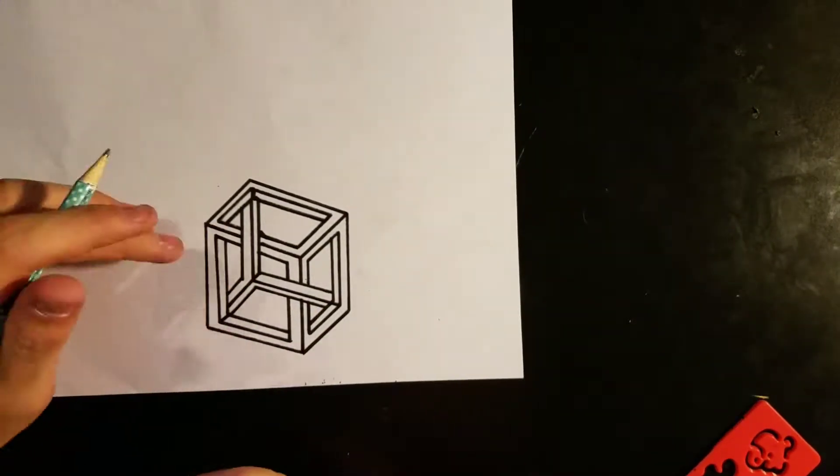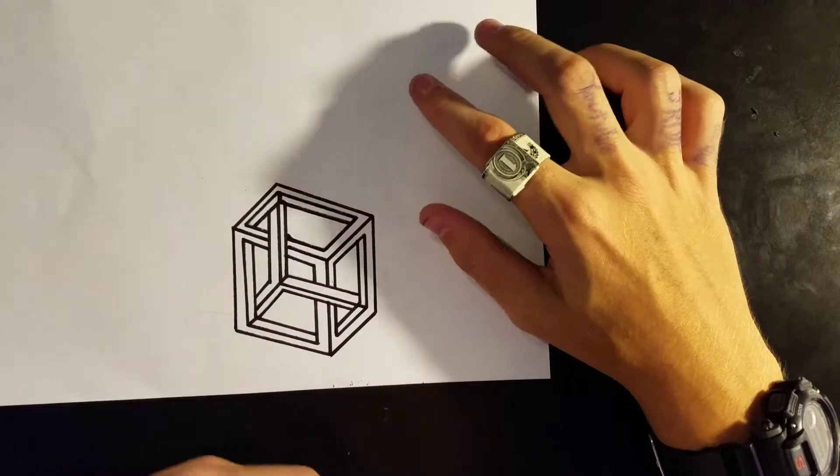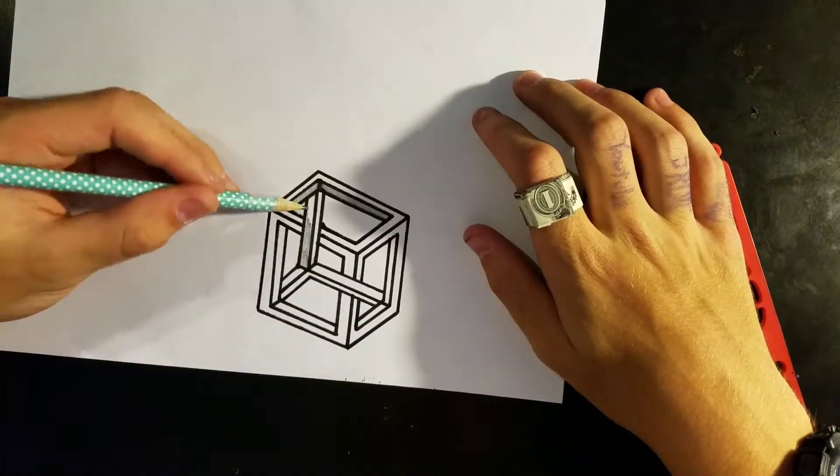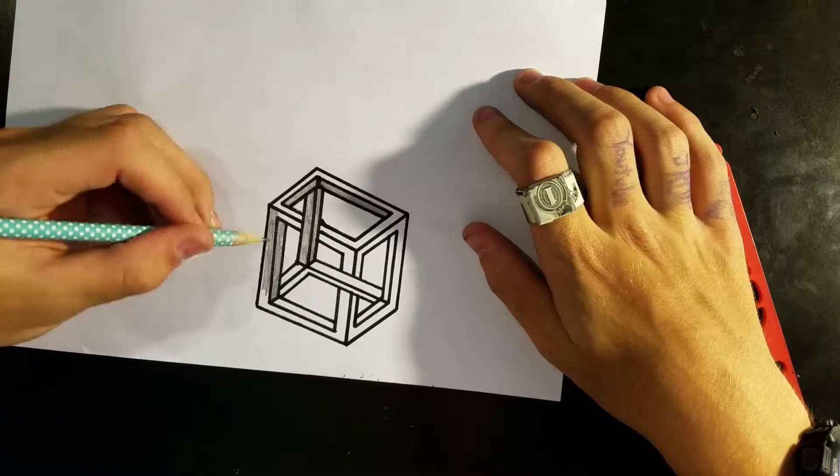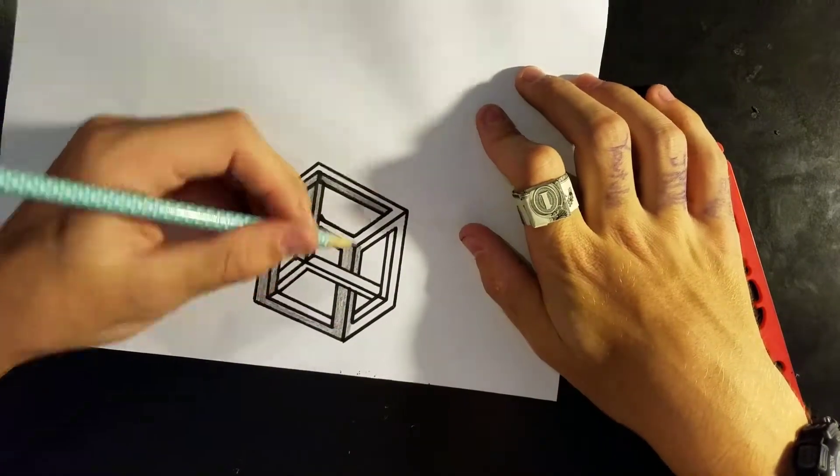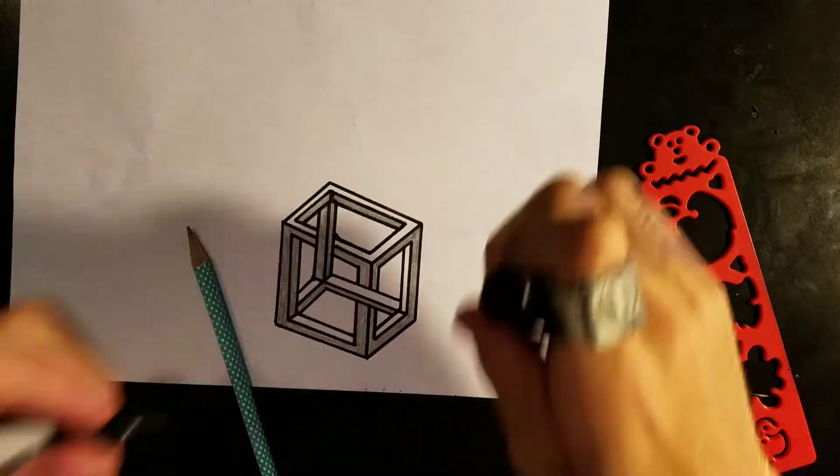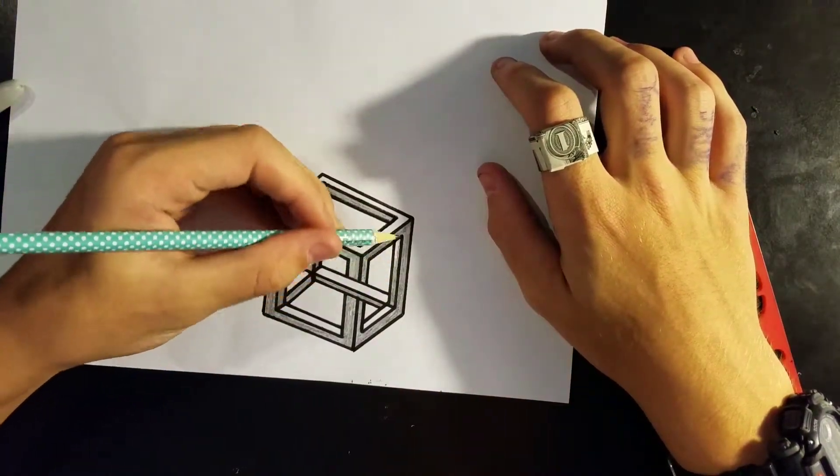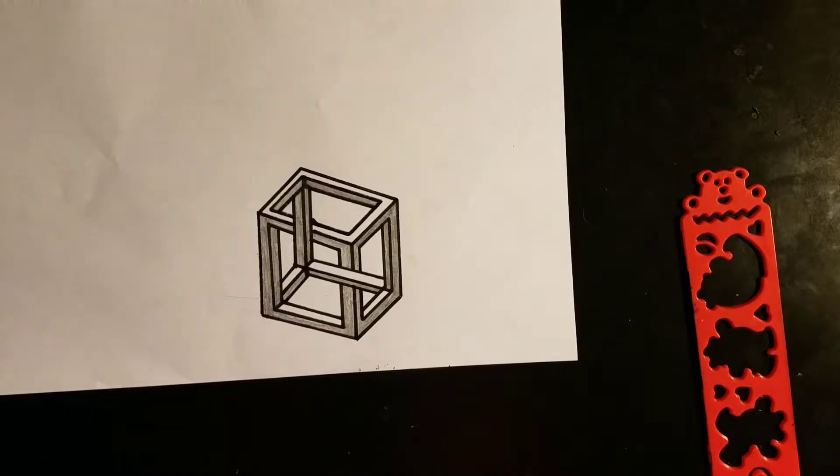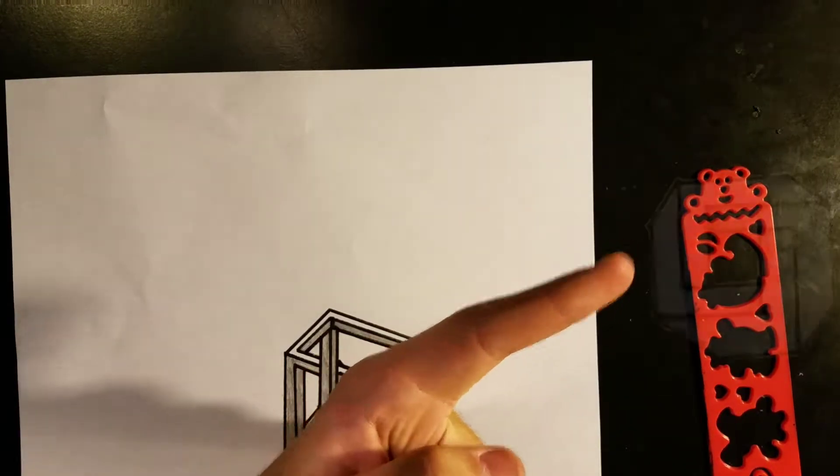Now we're going to do the final part, which is shading it in. So we're going to enter the timelapse mode once again. Okay guys, this is the first shape. We have two more to go. On to the next one. It is right there. That is what it looks like.